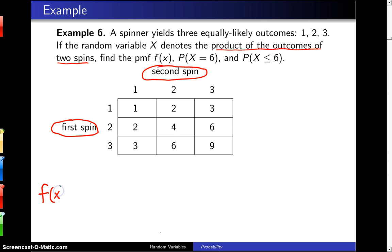So when I'm writing down the probability mass function f, I start with the support, and in this case, the support can be x equals 1, 2, 3, 4, 6, and 9.